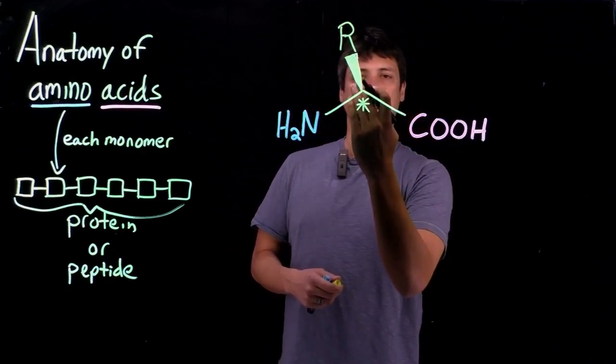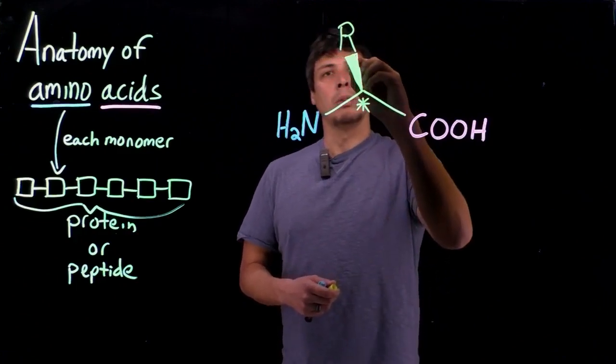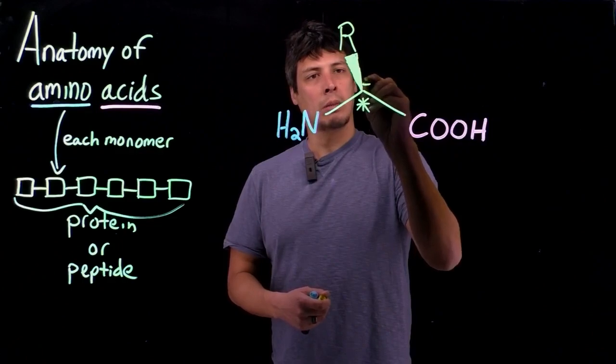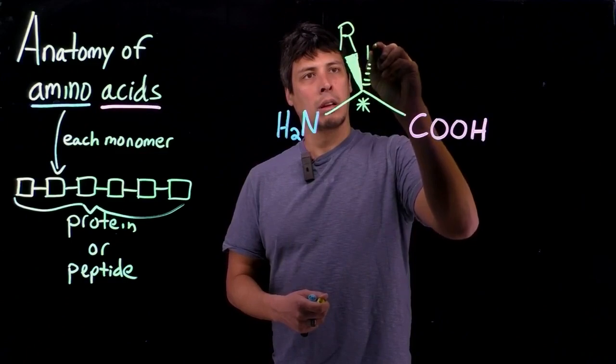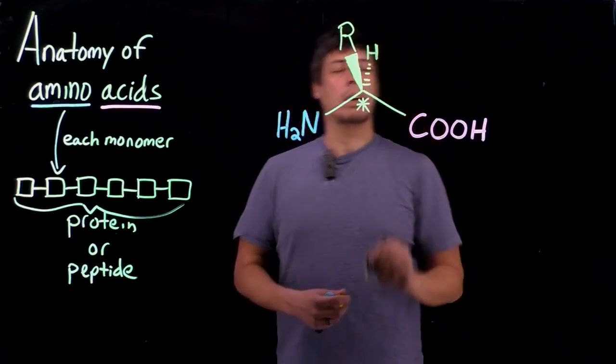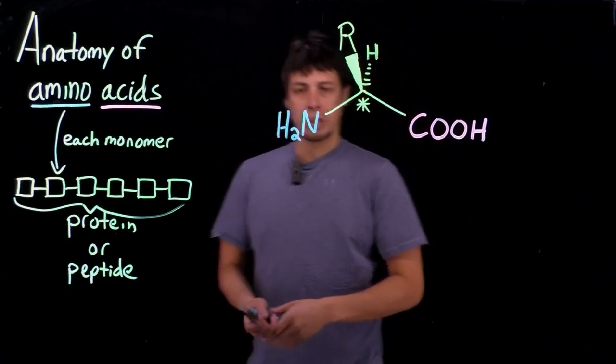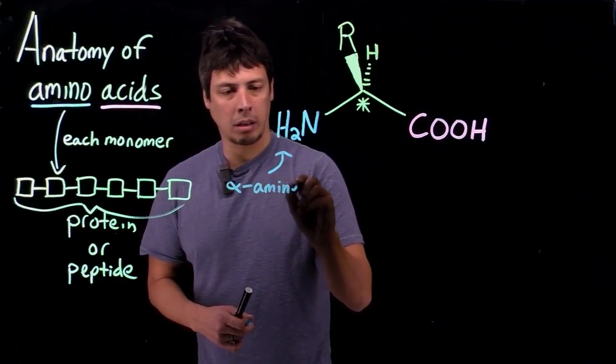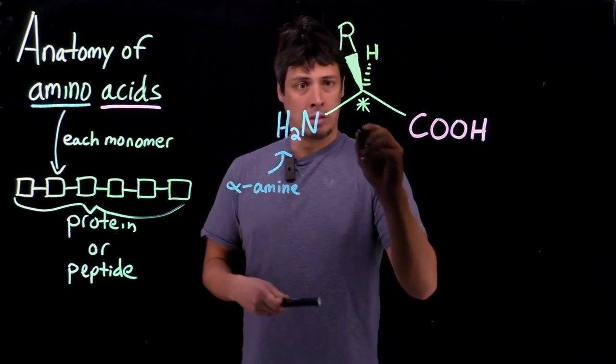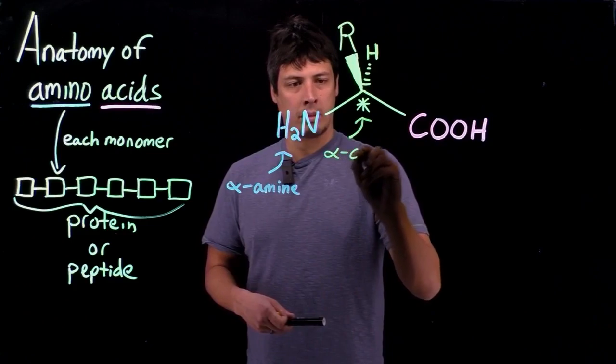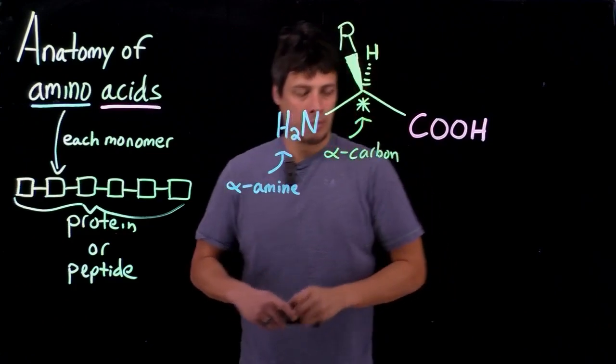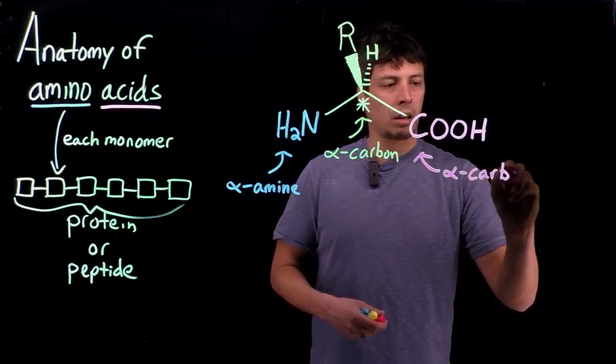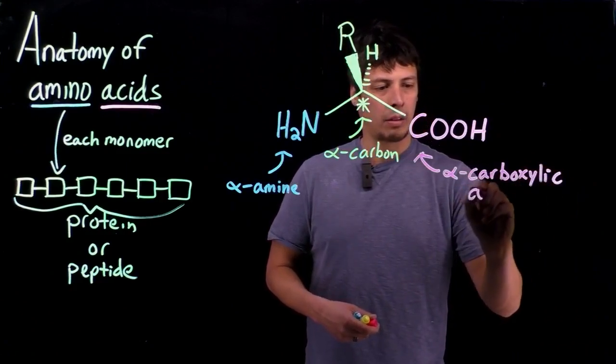And so, we denote the, again, coming from organic, we denote the stereochemistry. We use this wedge to indicate that this bond is coming out of the plane of the board in this case. And then, we have dashed lines to indicate the fourth atom that's connected, and that's a hydrogen. So, we call this an alpha amine, because it is attached to the alpha carbon of the amino acid. And then, by this convention, we call this the alpha-carboxylic acid.